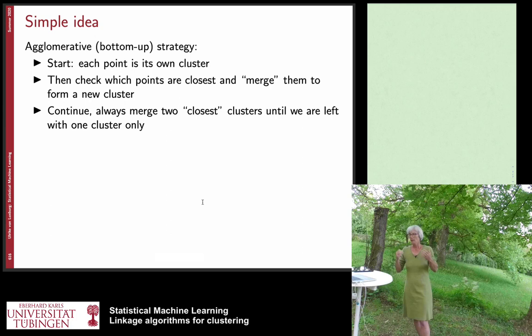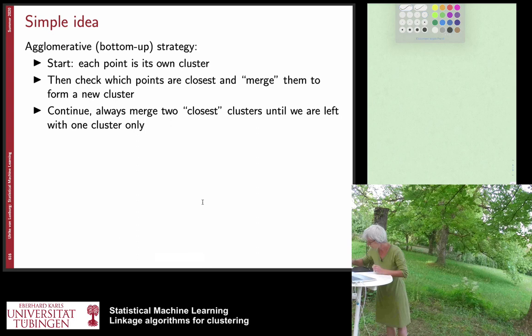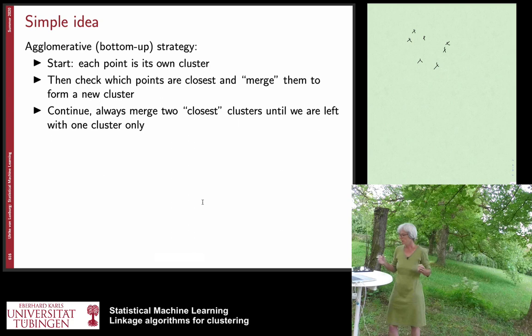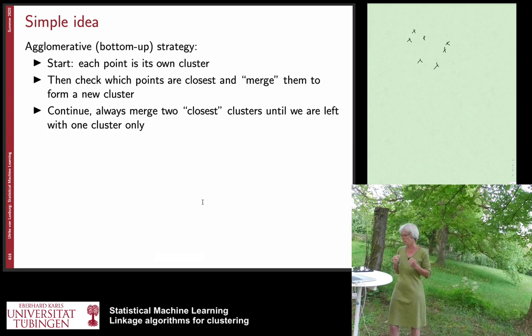Let me illustrate it with a simple drawing. Say this is our data set consisting of seven or eight points. What single linkage does — it's the simplest of all these algorithms — it looks at the data set and asks: currently everybody is their own cluster, and now single linkage wants to merge two clusters. It merges those two points which are closest to each other. In this case, linkage would merge these two points, now connected by a red line.